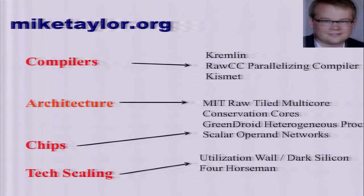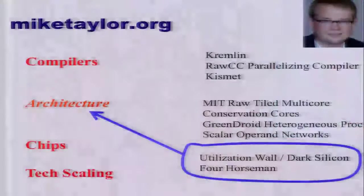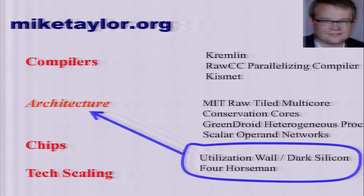I have published in compilers and architecture, and as was mentioned, I worked on the MIT Raw project when I was a grad student. Recently I've worked on a processor called GreenDroid, which is targeted to the dark silicon regime. In my architectural explorations I like to build chips, and I also read IEDM papers, which led me to do some work in technology scaling — conveying that work to architects and building models for how they should focus their research on emerging challenges.